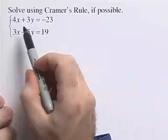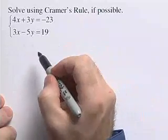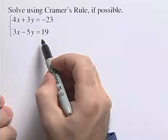Here we want to solve a system of linear equations using Cramer's Rule. We're given the system 4x plus 3y equals negative 23, 3x minus 5y equals 19.